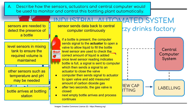Level sensors check the correct amount of liquid is added. Once the level sensor indicates the bottle is full, a signal is sent to the computer, which then sends a signal to the actuator to close the valve and stop filling the bottle. The computer then sends signals to the actuator to open a valve and add a measured amount of carbon dioxide gas. After two seconds, the gas valve is closed, the empty bottles arrive, and the process continues.